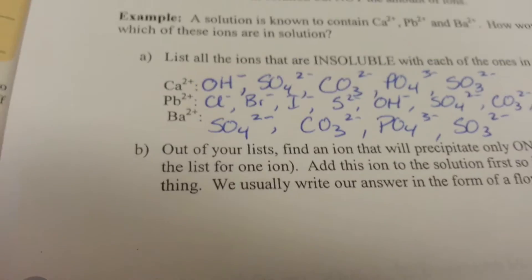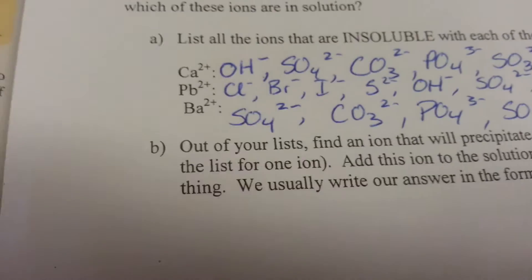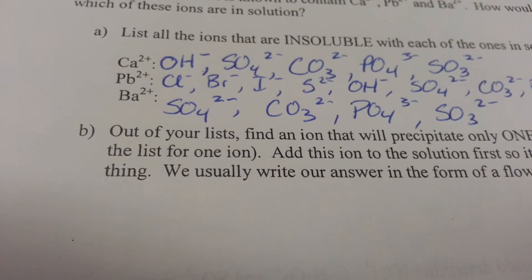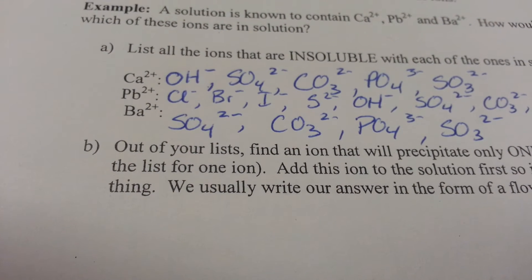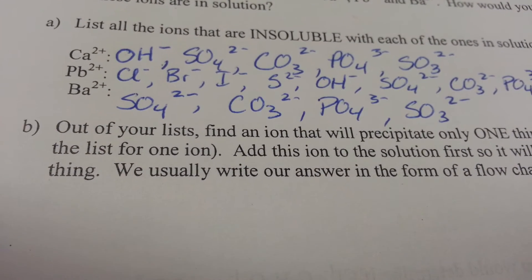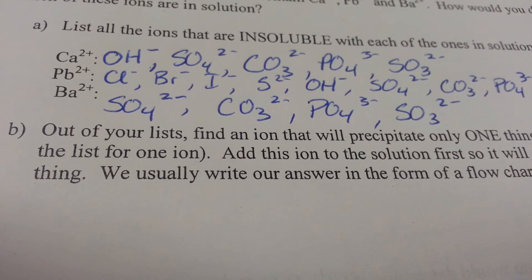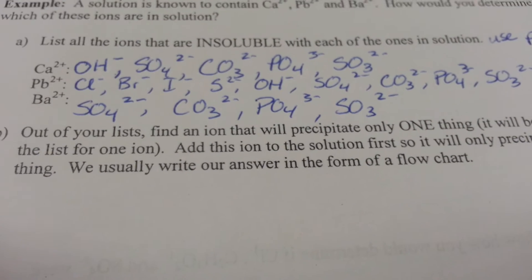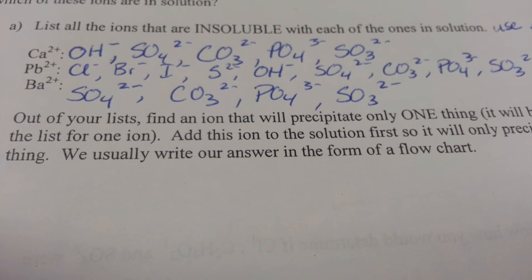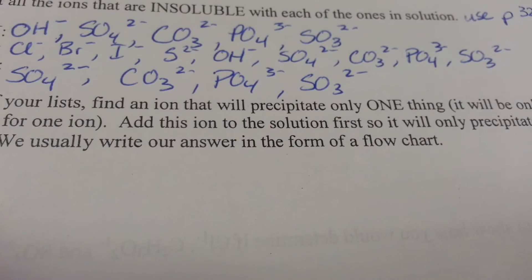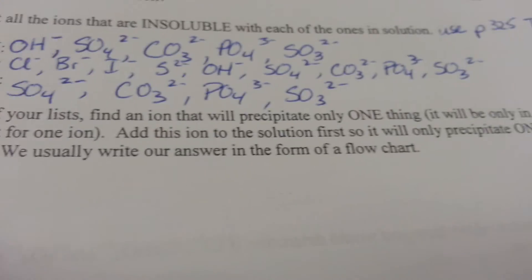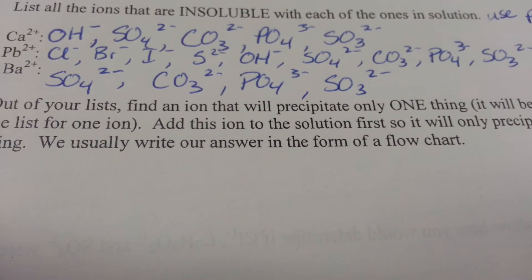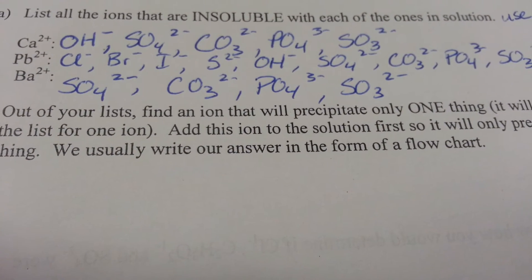Step two in our sequential chemical analysis, we are trying to identify ions that are specific to only one substance. So it reads out of your list, find an ion that will precipitate only one thing. It will be only in one of the lists for the ion. Add this ion to the solution first so it will only precipitate one thing. We usually write our answer in the form of a flow chart. First, let's get a plan before we make our flow chart.